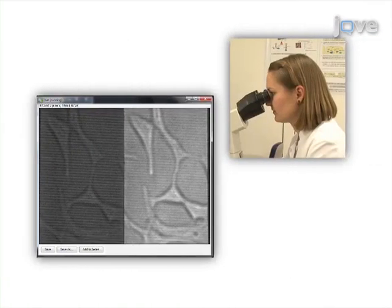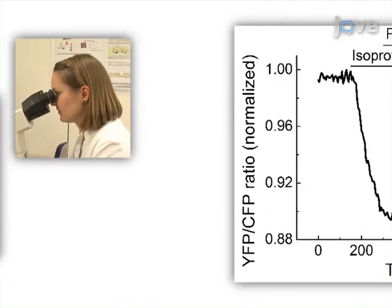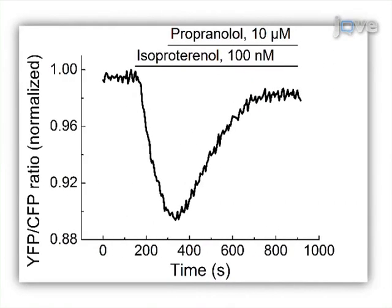Once the system is completely set up, its use in measuring intracellular cyclic AMP levels in transfected cells is demonstrated. Data obtained using this system exhibit its usefulness in monitoring intracellular cyclic AMP dynamics by measuring FRET ratios.